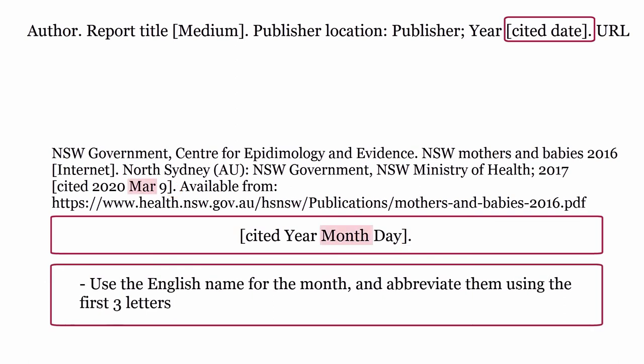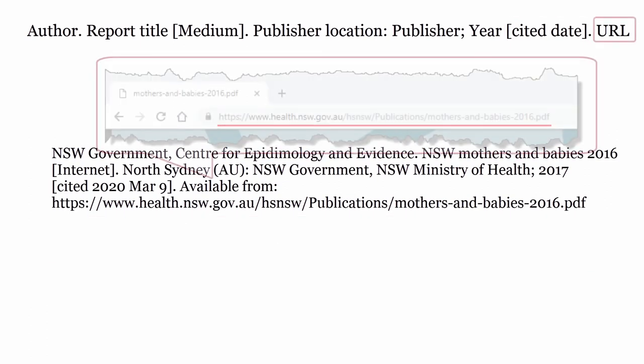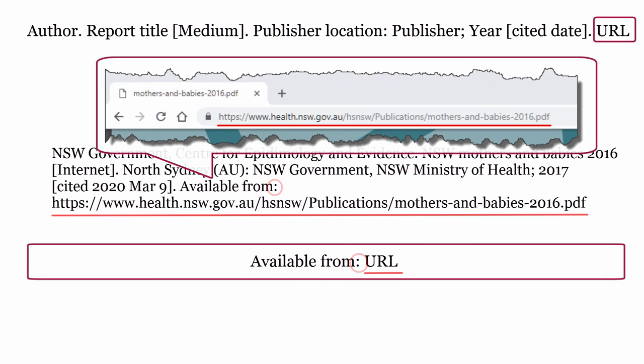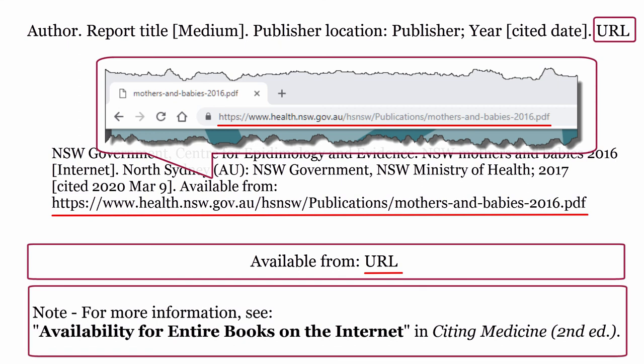Use the English name for the month and abbreviate them using the first three letters. URL: this is usually the landing page for the report. Begin with the phrase available from, followed by a colon. Copy the URL as it appears in the browser. For more information, see availability for entire books on the internet in Citing Medicine, second edition.